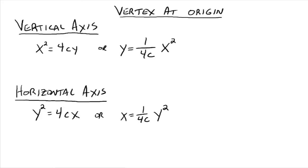This is part two on discussion of the parabola. From the previous video, part one, we talked about the parabola with the vertex at the origin. We had a vertical axis of symmetry — those are the ones that opened up or down — and they had the form y equals x squared. And horizontal axis, the ones that opened right or left, had the form x equals y squared. So the vertex was at the origin. Now we're going to move the vertex.